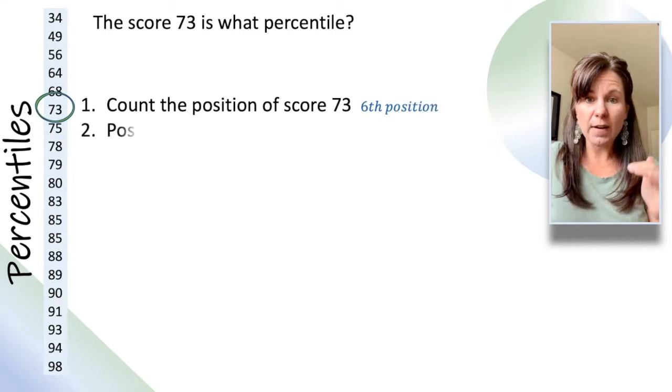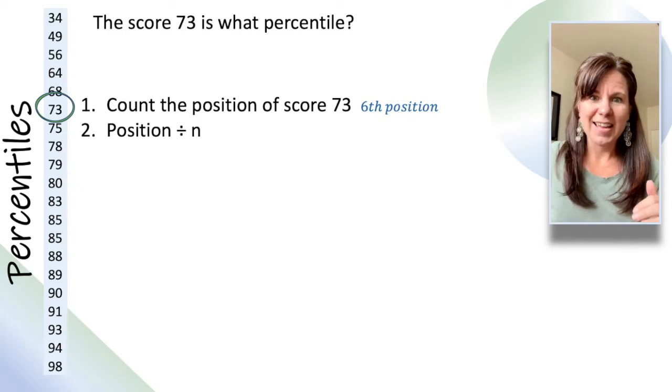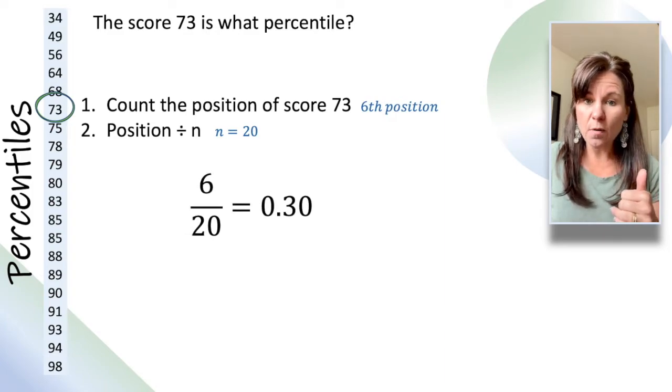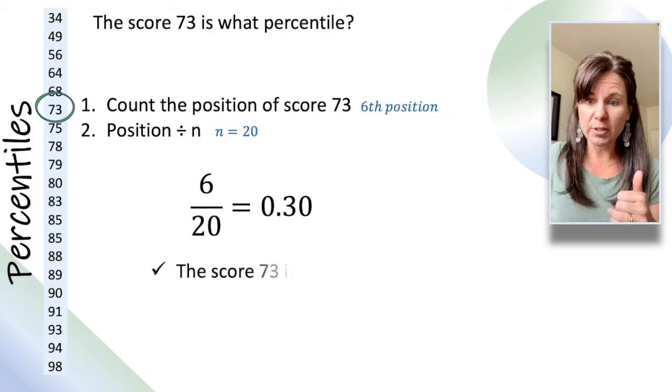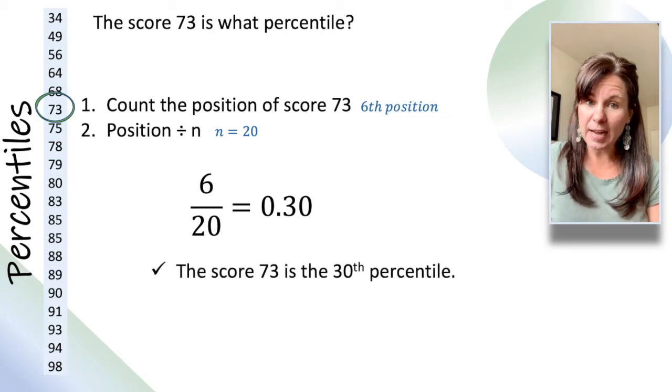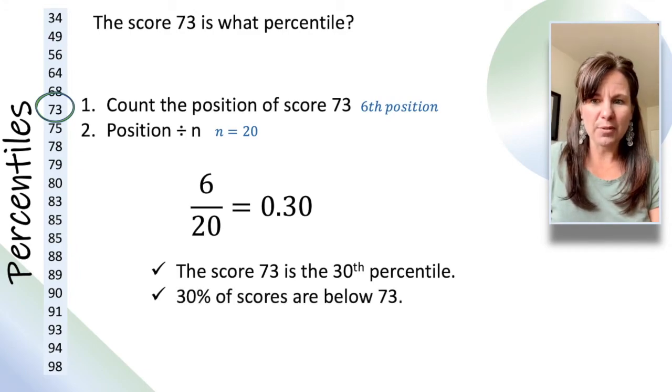Now, we take the position divided by the number of entries there are, which is 20 still. So, 6 divided by 20 is 0.30, or 30%. So, the score of 73 is the 30th percentile, which means that 30% of scores are below 73.